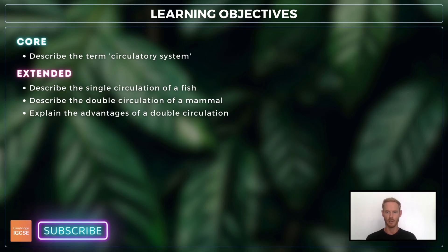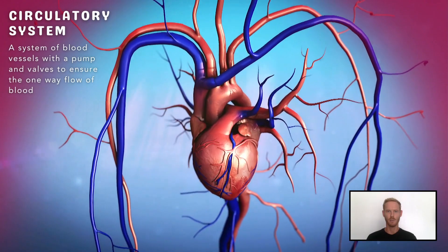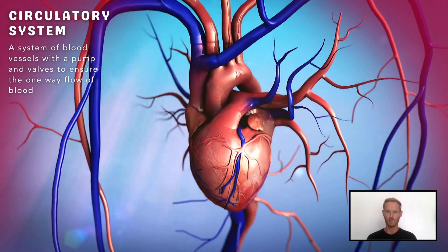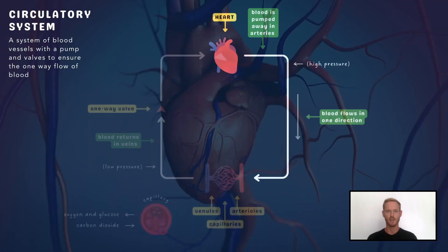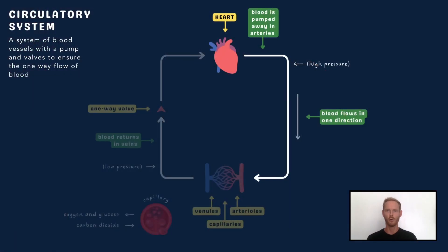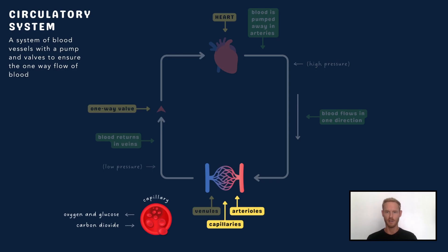The circulatory system can be defined as a system of blood vessels with a pump and valves to ensure the one-way flow of blood. The muscular heart contracts, forcing blood through arteries at high pressures. Arteries lead to smaller vessels called arterioles, and arterioles split off into capillaries which form a network throughout the organs and tissues.